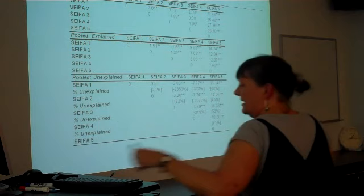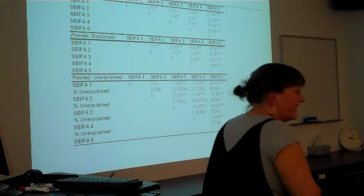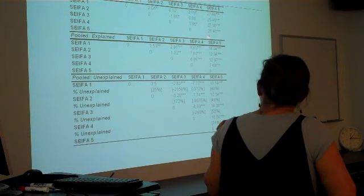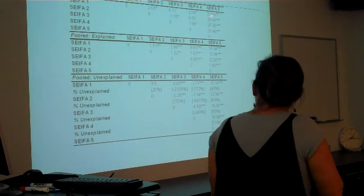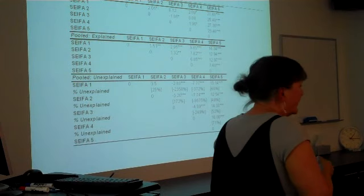So, these are results for the Oaxaca-Blinder analysis. So, what we've got is the total difference. So, we're comparing SIFA 1 with SIFA 2, 3, 4, and 5, and so on. So, we're comparing each pairwise combination of these SIFA quintiles. And what we find is, in the raw data, this is the number in the raw data that you would expect, that difference between 75 and 100 days. So, you can see that, comparing SIFA 1 and SIFA 5, SIFA 5 people wait 27 days less than SIFA 1, and so on down the road. So, that's in the raw data.